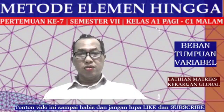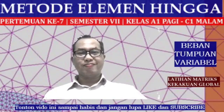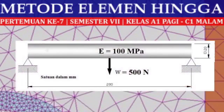Now we go directly to the next exercise. We have a bar with a square cross-section with width × height = 20 mm, made from a material with modulus of elasticity 100 MPa. A load of 500 N is hung at the midpoint. The total length of the bar is 200 mm. We want to determine the displacement along the bar. We will divide it into 6 elements.